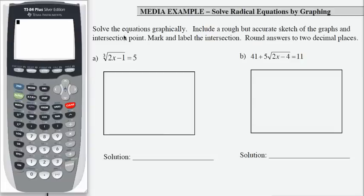Here I'm asked to solve the equations graphically including a rough but accurate sketch and marking the intersection point. So let's look at each one. Part A, I have the cube root of 2x minus 1 equals 5. So if I'm going to use the graphing method then I'm going to use y1 as the left-hand side and y2 as the right-hand side.